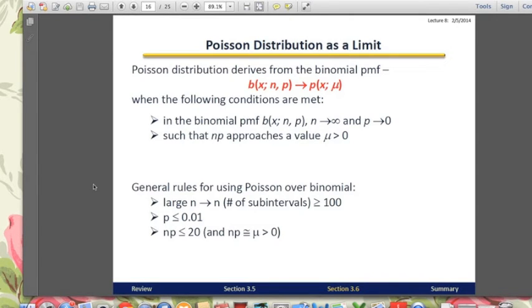Before we choose to use the Poisson distribution, we have to look at the sample size and the probability. For the sample size, it has to be greater than 100, and for the probability it has to be less than 0.01.